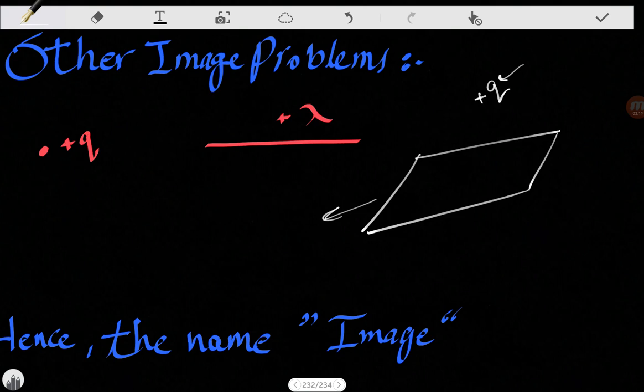Hence the name 'image' because we're going to do a +Q here and a -Q here, or if we have a plus line of charge here, we're gonna have a minus line of charge here. That's it for today, see you next time.